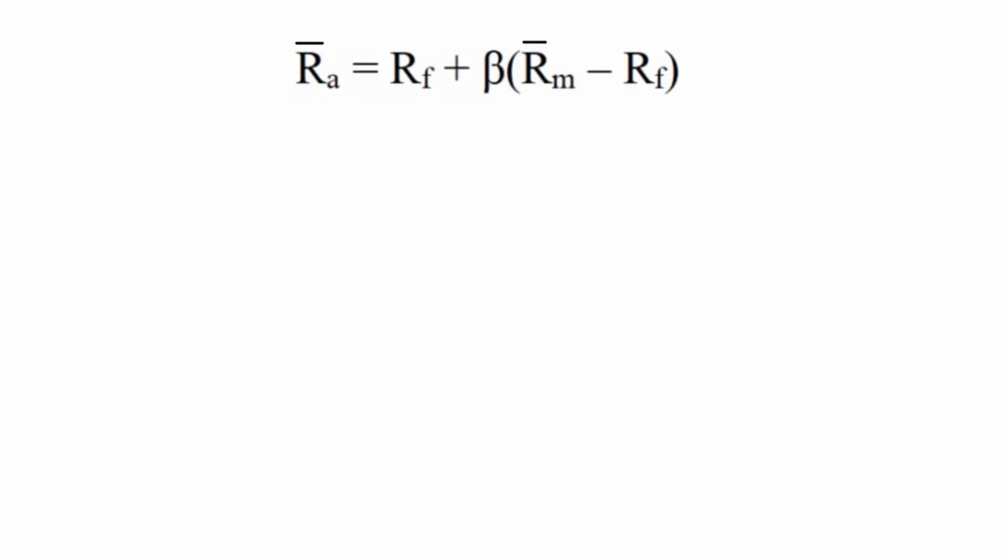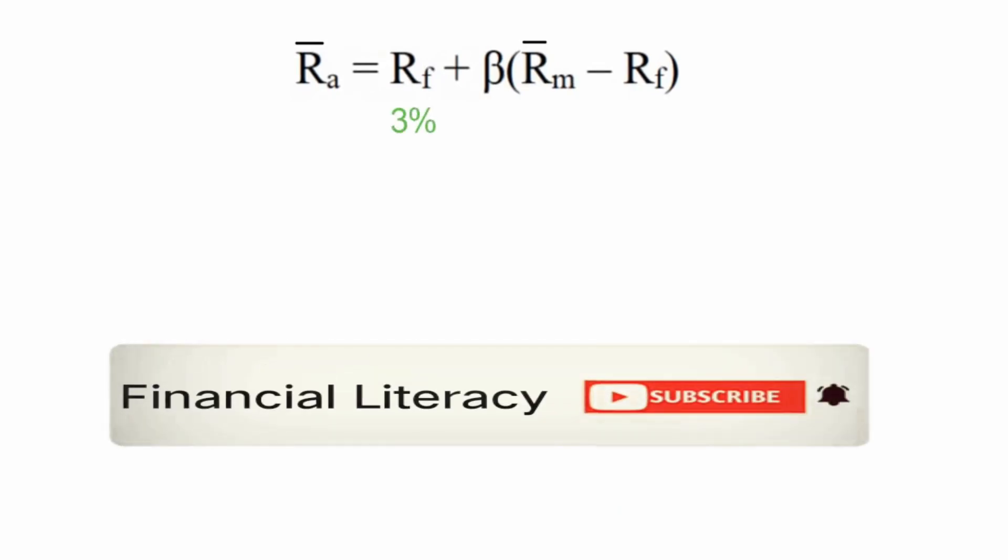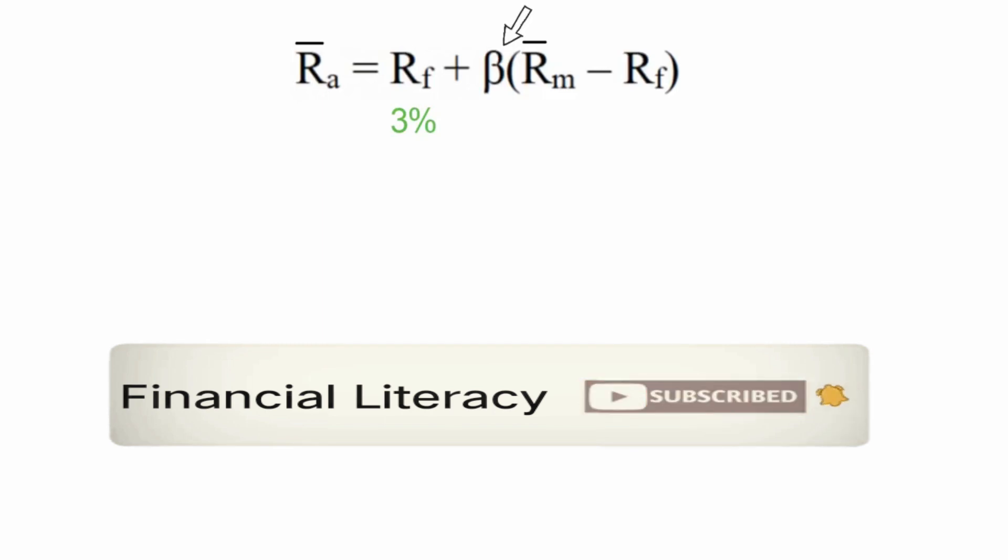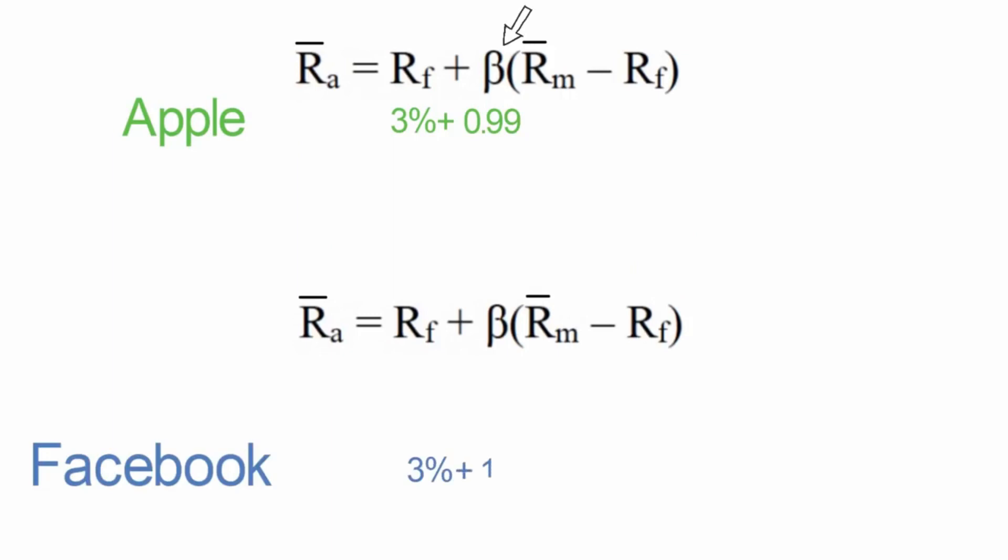So RF is the risk-free rate. Here we plug in 3%. And this symbol is the Greek symbol for beta. For Apple, we can replace this beta with 0.99. And we could put Facebook's formula down here. And there we will put 1.2. Then in the parenthesis, we have the expected market return minus the risk-free rate. They call this the market premium. For the expected market return, we are using 9%. And for the risk-free rate, it's the same as the 3% that we were using over here.